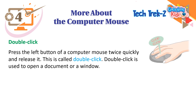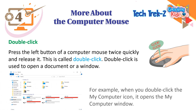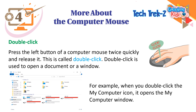Double Click. Press the left button of a computer mouse twice quickly and release it. This is called double click. Double click is used to open a document or a window. For example, when you double click the My Computer icon, it opens the My Computer window.